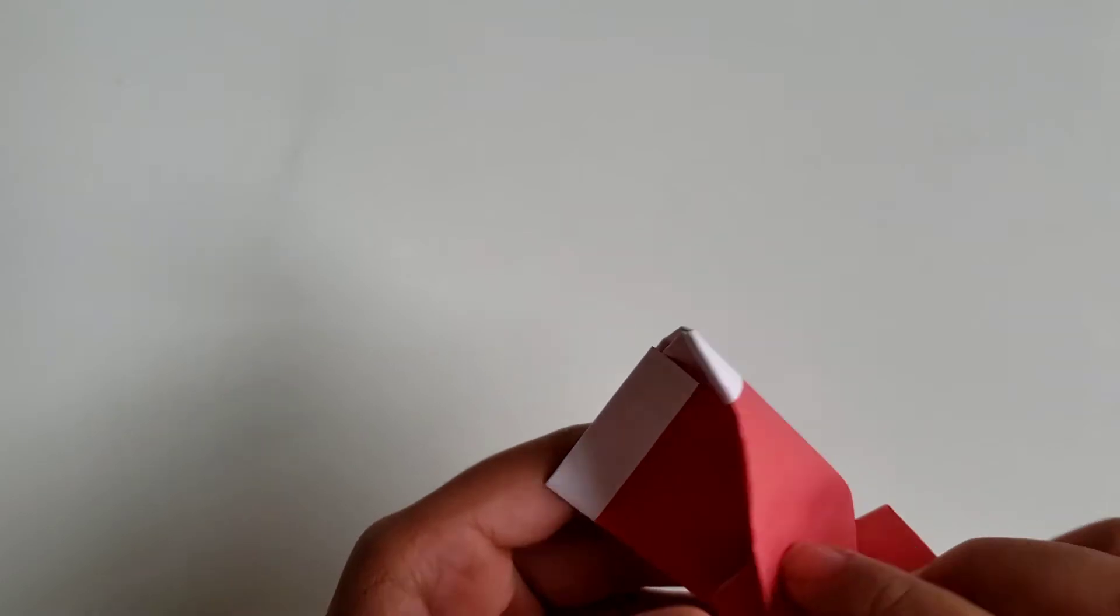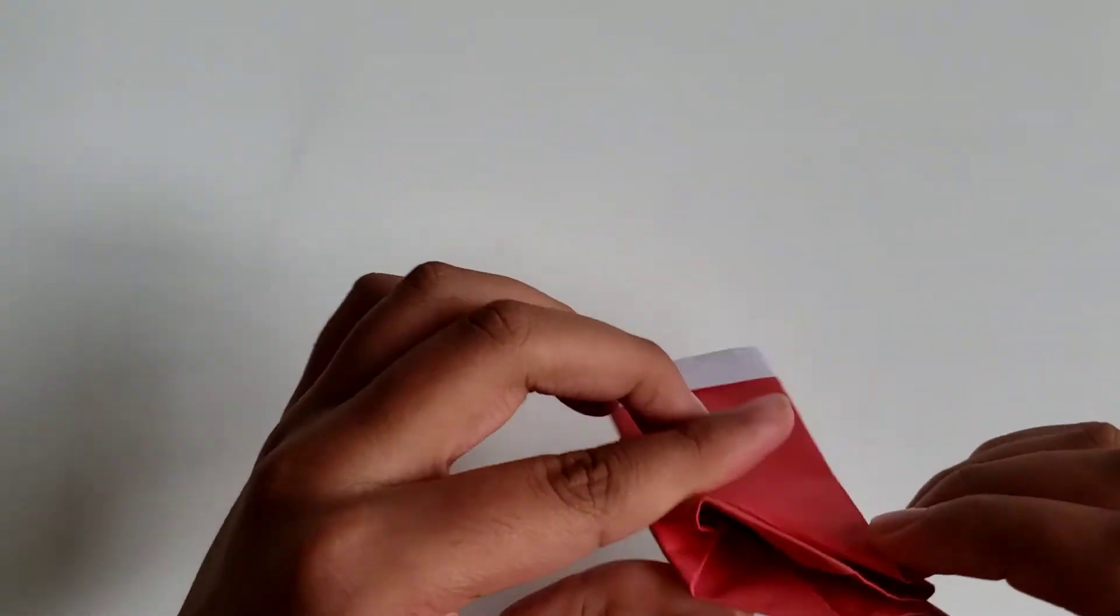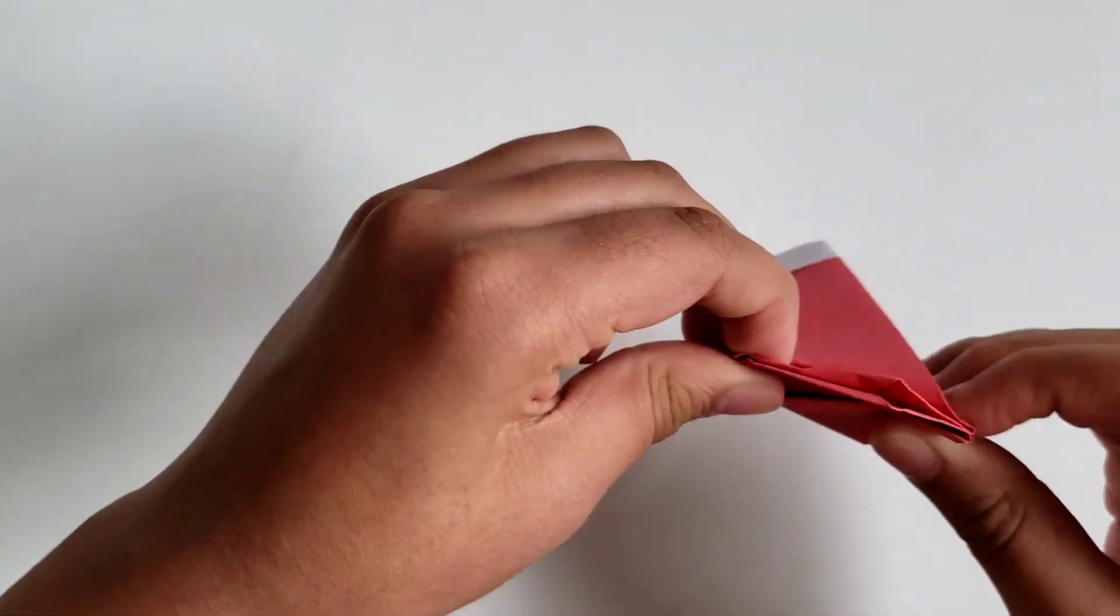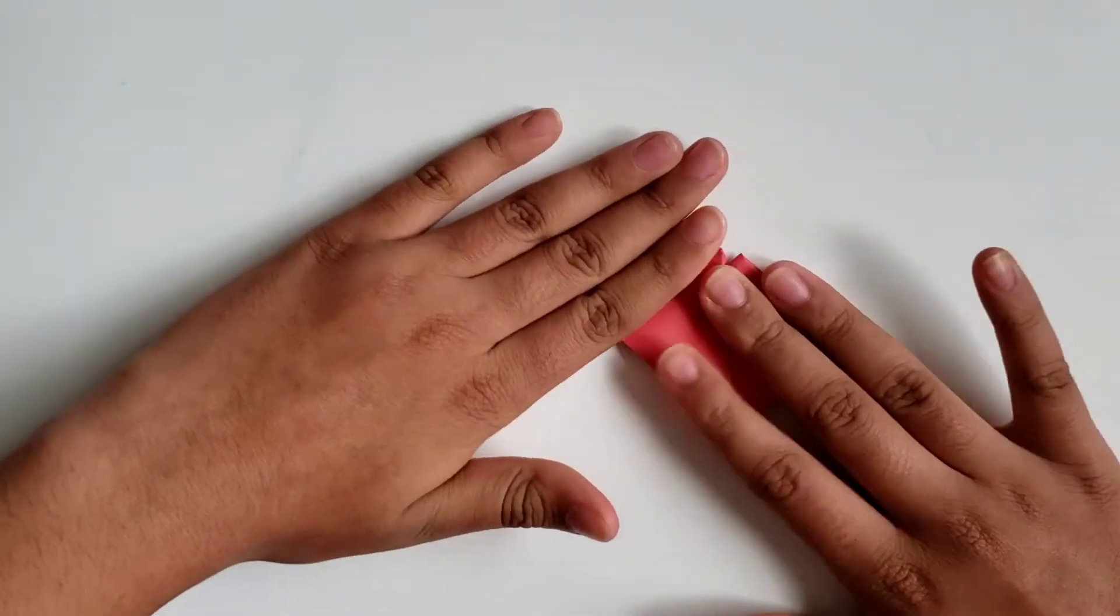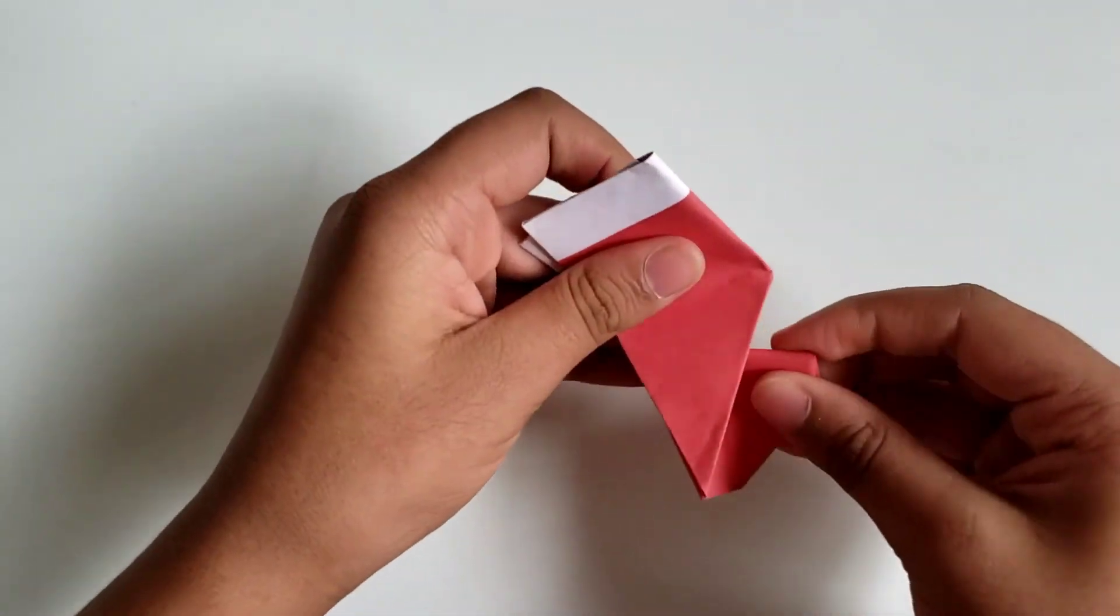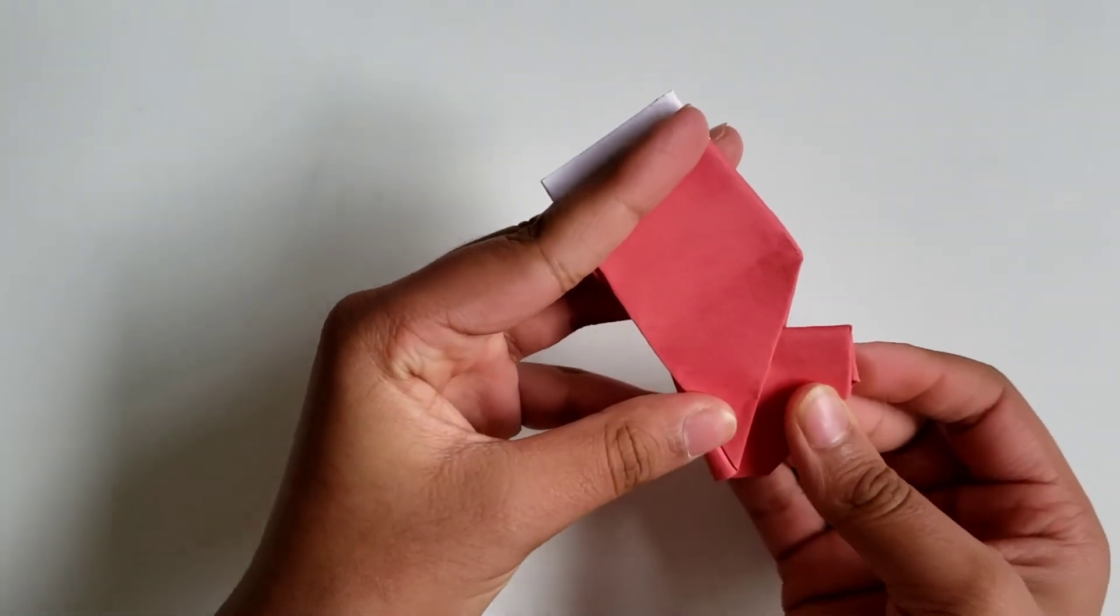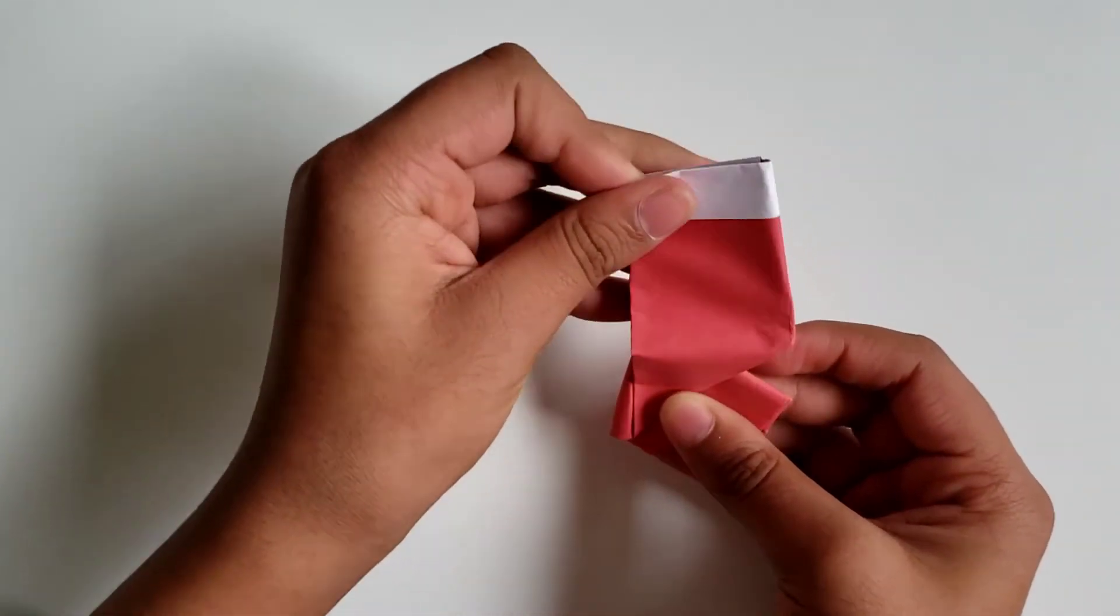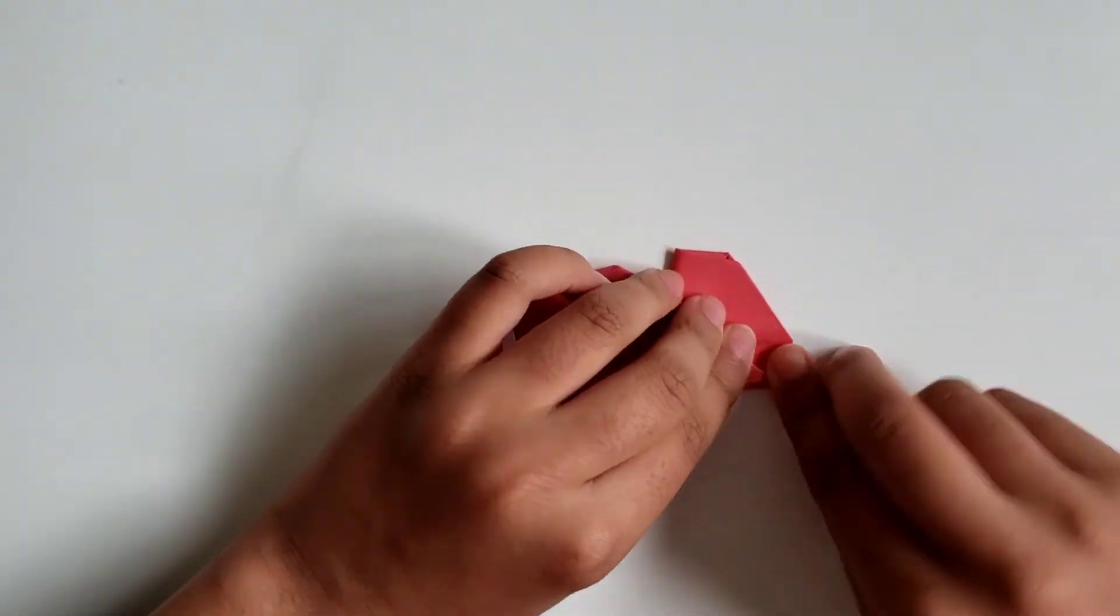You're going to crease it, and you see your stocking is coming out. And now to adjust the size of how the sock looks, you can kind of twist it around a little bit. Like I made this, fix this crease so it lines up.